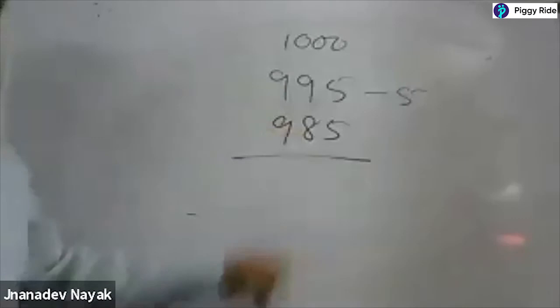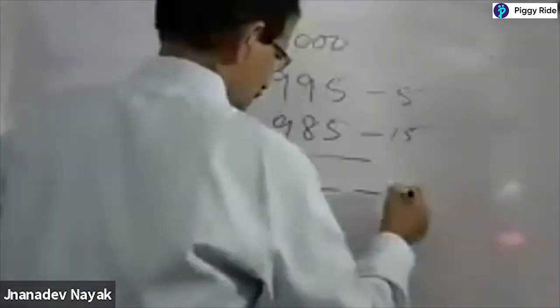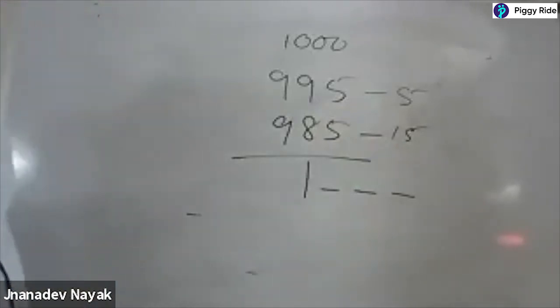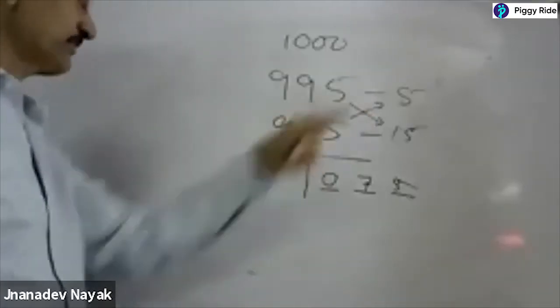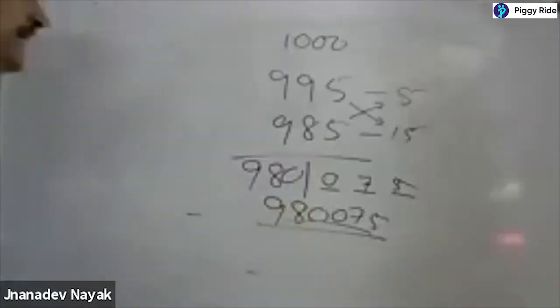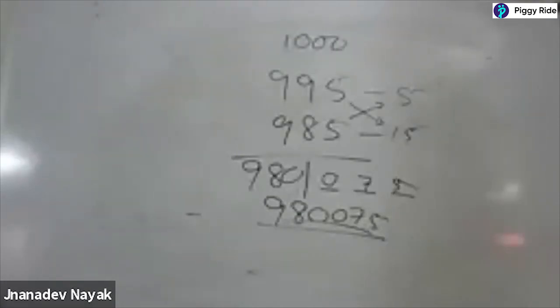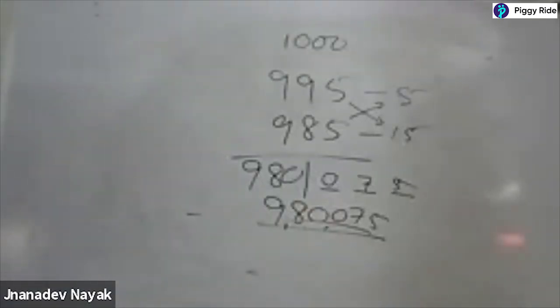One more example: 995 multiplied by 985. The base is 1000. How much is 995 less than 1000? 5 less — write minus 5. How much is 985 less than 1000? 15 less — write minus 15. The base has 3 zeros, so put 3 dashes on the right. Multiply the deviations: minus 5 into minus 15 equals plus 75 — write 075. Cross subtract gives 980. So 995 multiplied by 985 equals 980075.